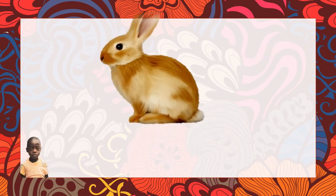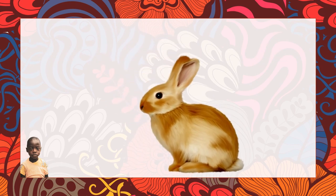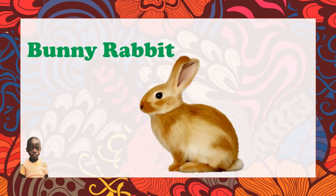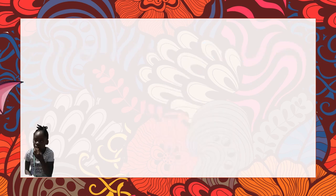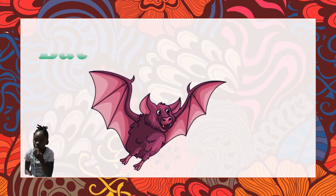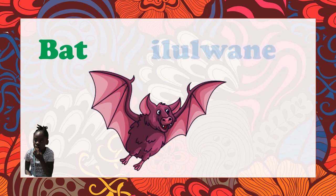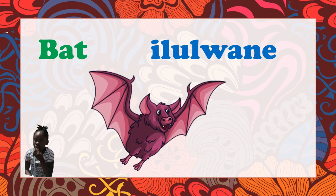Now let's see what we have now. A rabbit — is it a bunny rabbit? We call that Unogwaja. One more time — Unogwaja. And what's this? It's a bat, right kids? And what's a bat? It's Ilulwani.